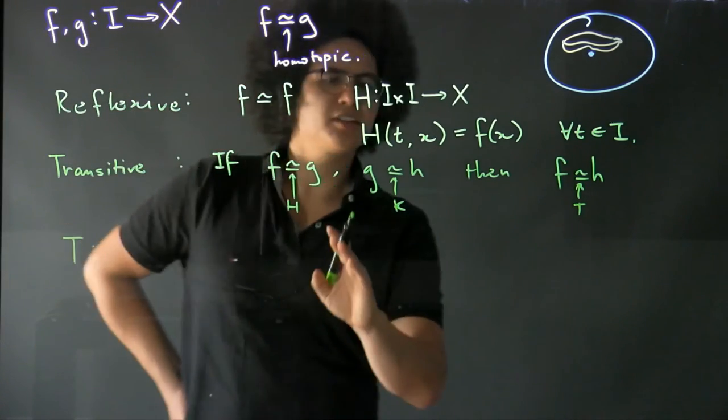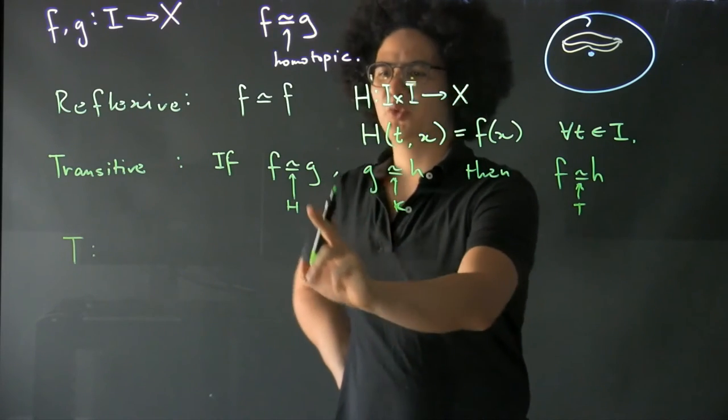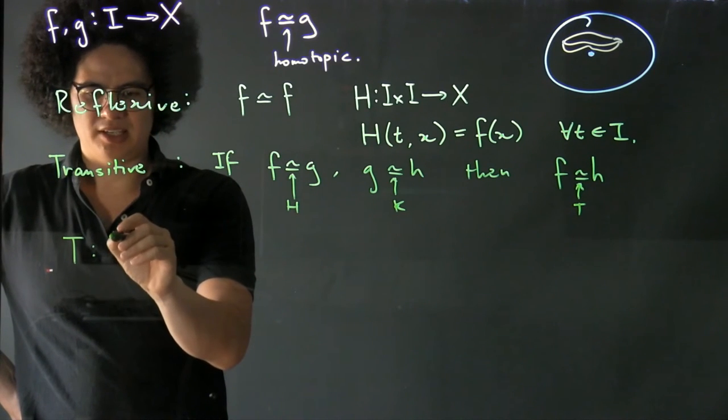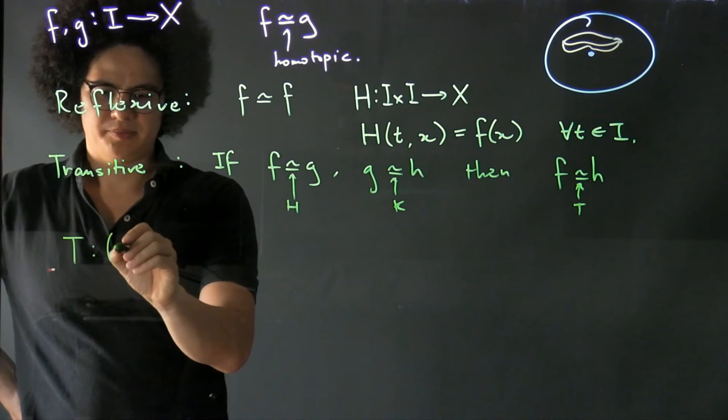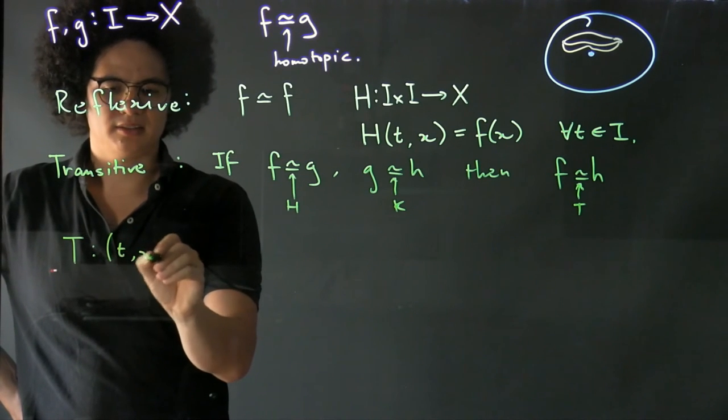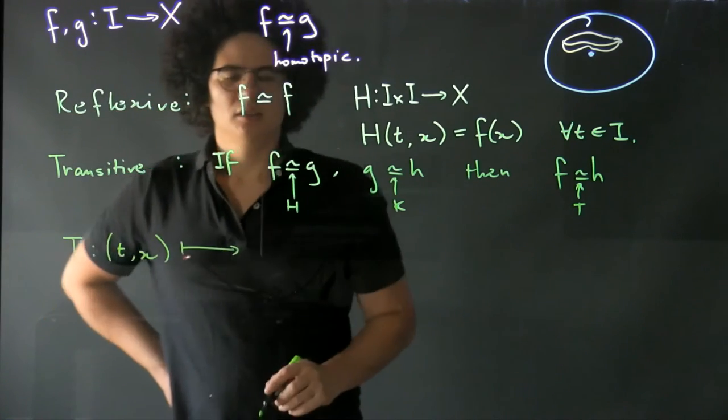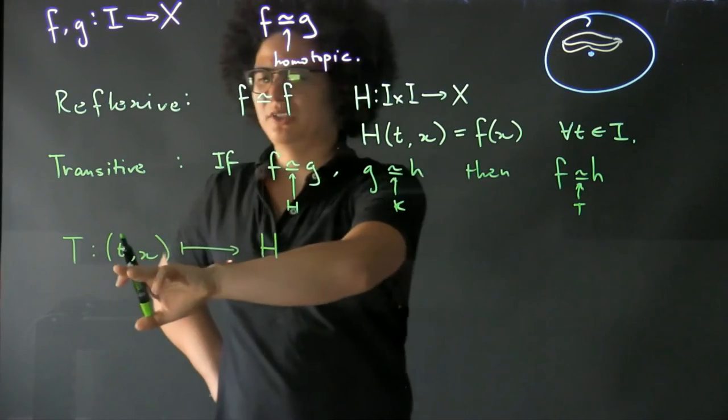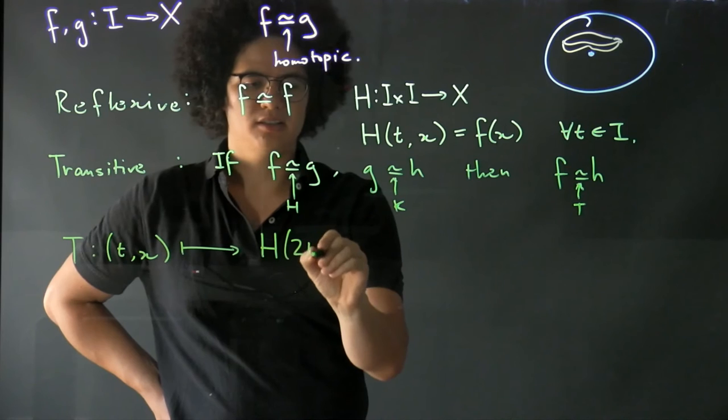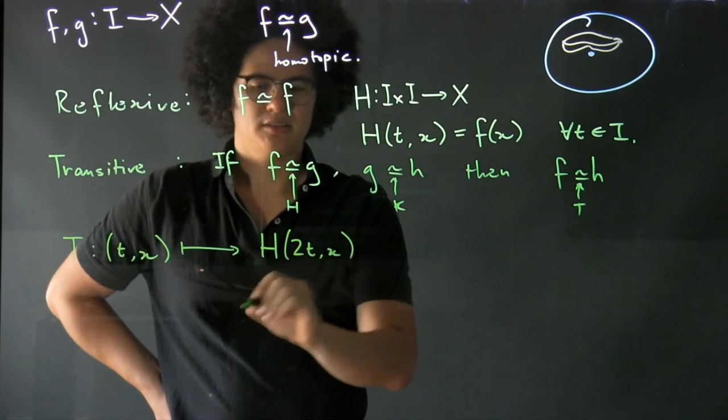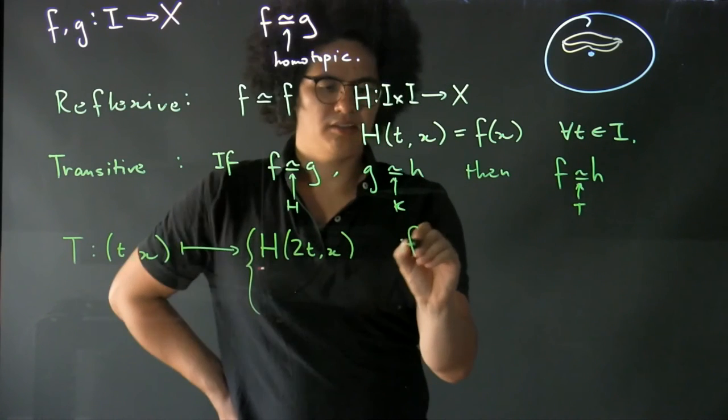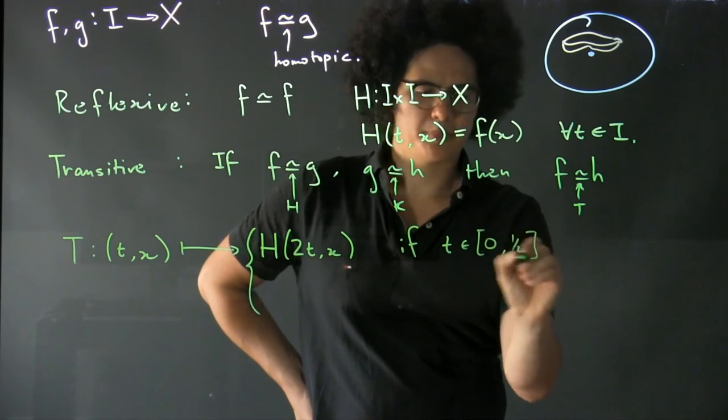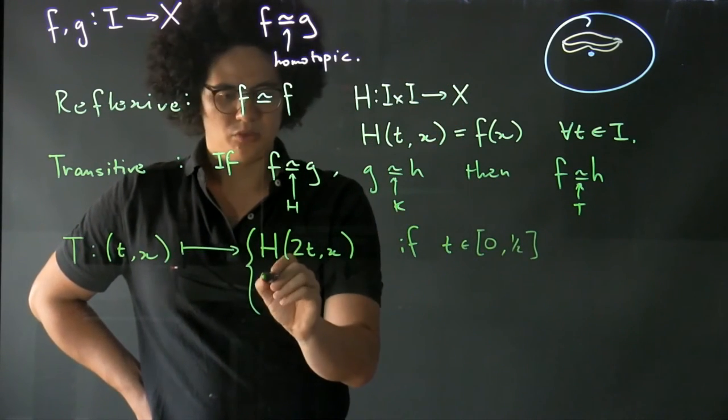And I'm going to define T as follows. I'm going to say that on the first half of the time interval I want to do H. So I want to send T(x) to H, and I want to do it twice as fast so that it still fits into an interval. So I'm going to send it to H(2t,x), and I'm going to do that if T is in the interval from zero to a half.